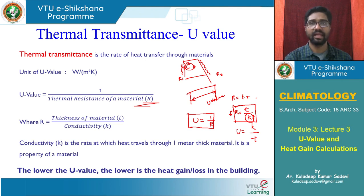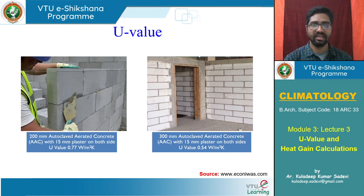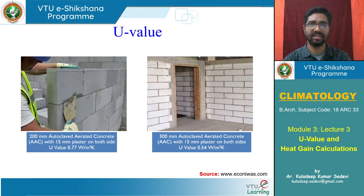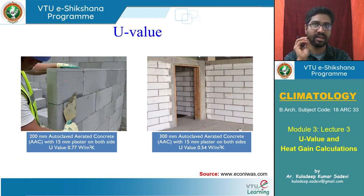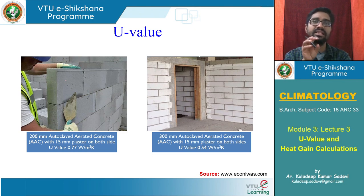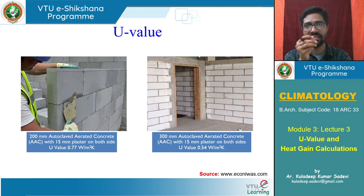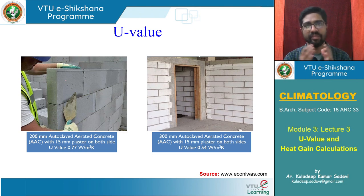Lower the U-value, lower the heat gain or heat loss from the building. Now let us look at U-value examples. Here we see a 200 mm autoclave aerated concrete (AAC) block — a lightweight cement block manufactured with aerated air bubbles inserted during production, forming air gaps throughout the concrete. The density is very low due to these air bubbles, and this air offers resistance to heat gain.